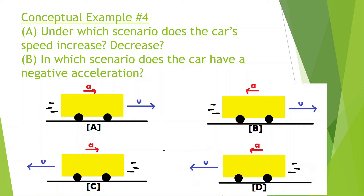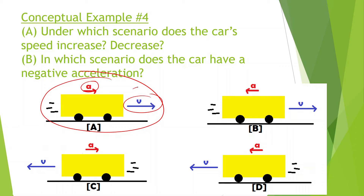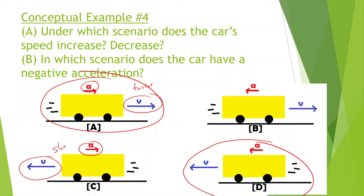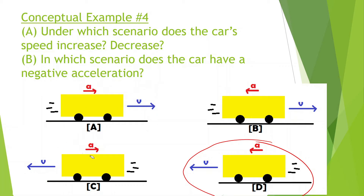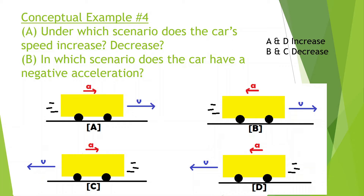Next problem: under which scenario does the car speed increase or decrease? We have scenarios A, B, C, and D. When the velocity and the acceleration are going in the same direction, that means it is getting faster and faster — the speed is increasing. We can see that for parts A and D. In B and C, the velocity and acceleration are in different directions, which means it is slowing down. Important to know: same direction means speeding up; different directions means slowing down.